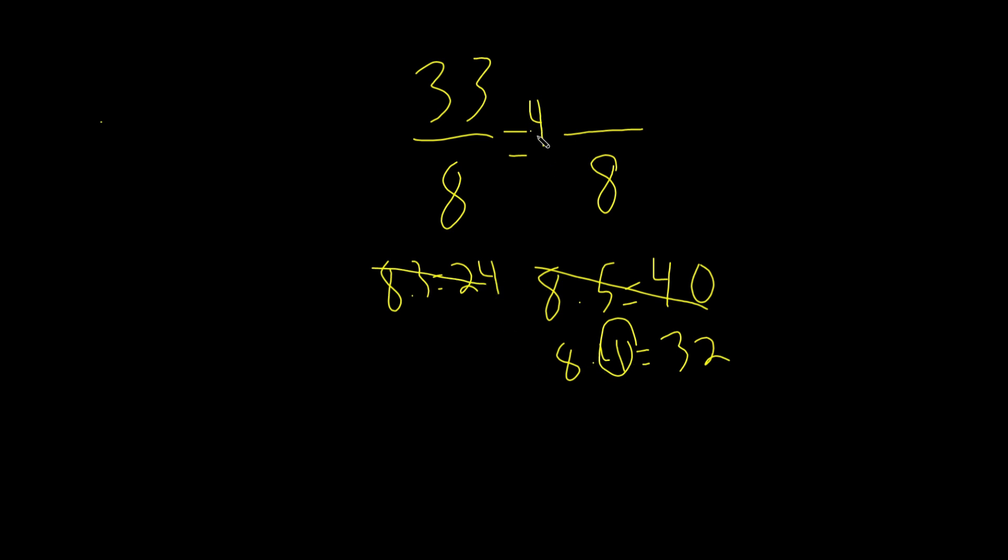So now that we found out our whole number, all we have to do is subtract our old numerator from our product of our whole number and our denominator, in this case, 32. So we subtract 32 from 33.